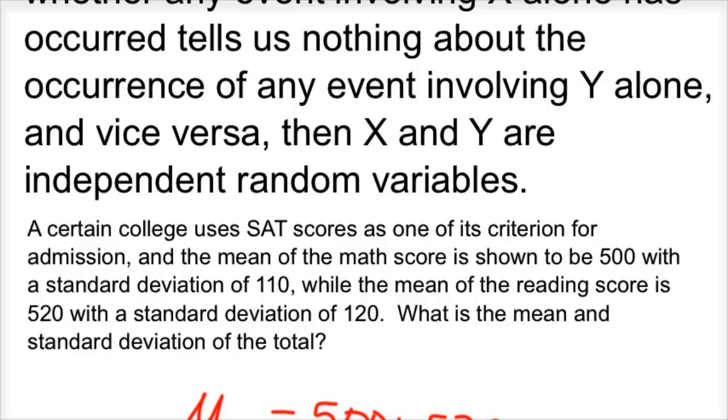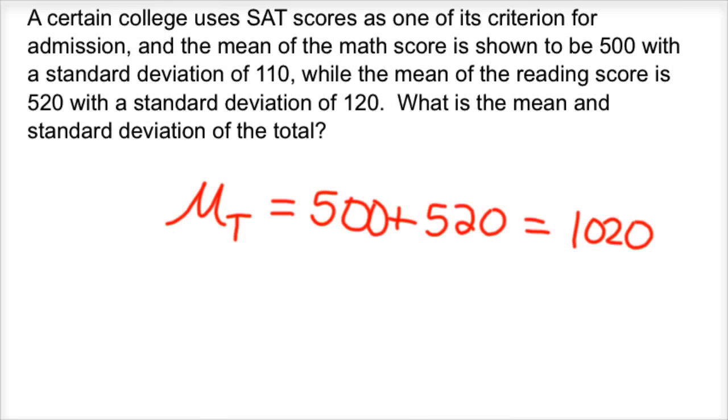Here's a good example. A certain college uses SAT scores as one of its criterion for admission, and the mean for the math score is shown to be 500 with a standard deviation of 110, while the mean for the reading score is 520 with a standard deviation of 120. What is the mean and standard deviation of the total? Your mean's straightforward. The mean of your total, mu sub T, equals 500 plus 520, or 1020.